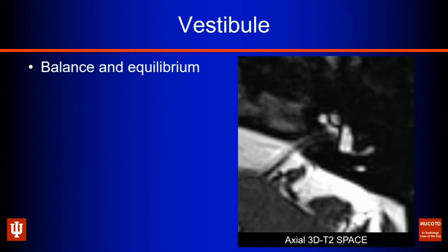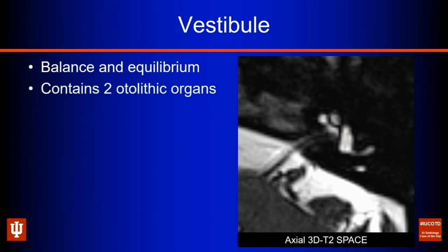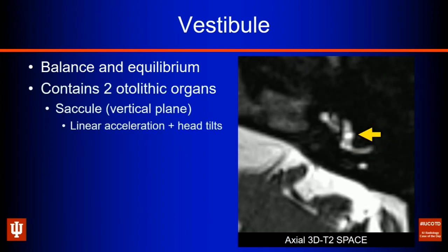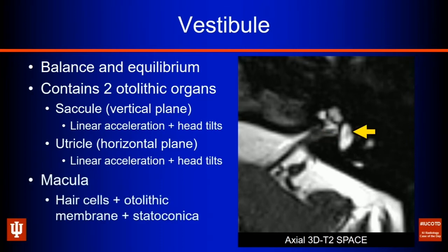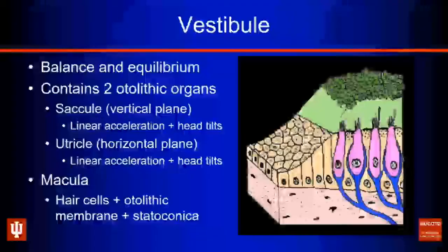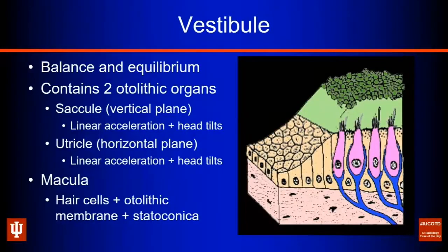Moving to the vestibule — our organ for balance and equilibrium, seen in yellow on this T2 space image. It contains two otolithic organs: the saccule, running in the vertical plane, and the utricle, running in the horizontal plane, which detect linear acceleration and head tilts. Looking at the utricle, we see the fuzzy darker area of the macula, containing hair cells, the otolithic membrane, and statoconia. A gelatinous substrate detects changes in acceleration, triggering hair cells to generate nerve impulses.